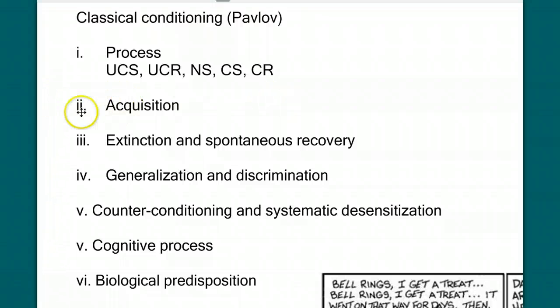We're going to talk about different topics like acquisition, the process of extinction, spontaneous recovery, what we mean by generalization and discrimination, counter conditioning and systematic desensitization, and also we're going to see the roles that cognitive process and biological predisposition have on our modern understanding of classical conditioning.